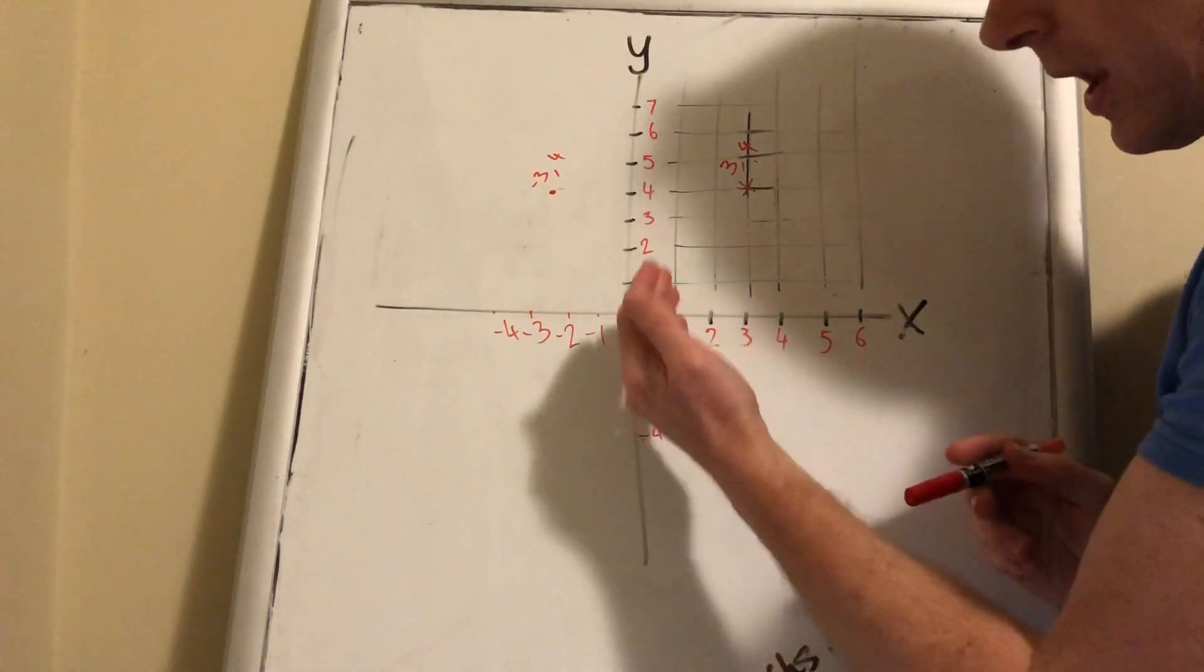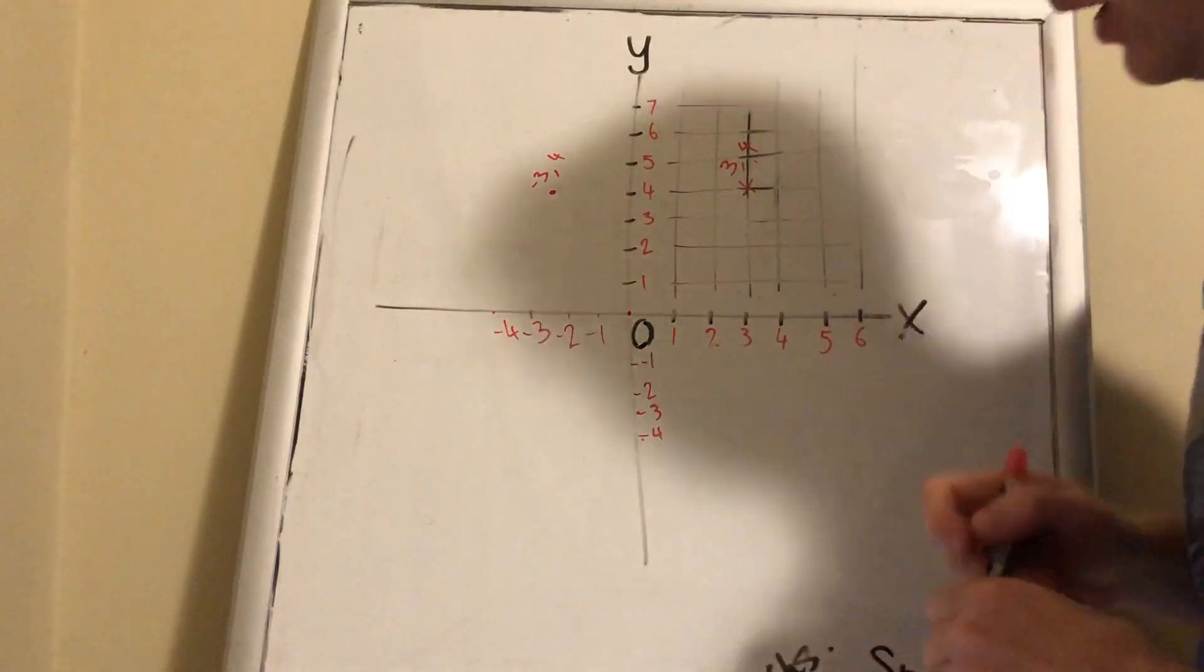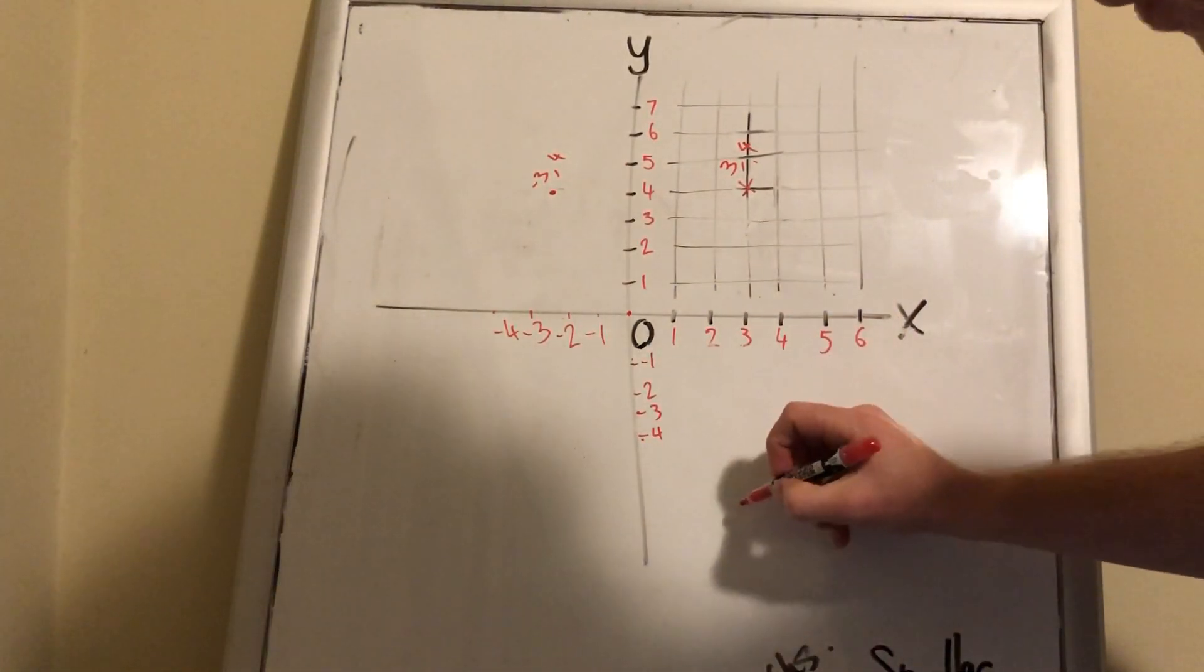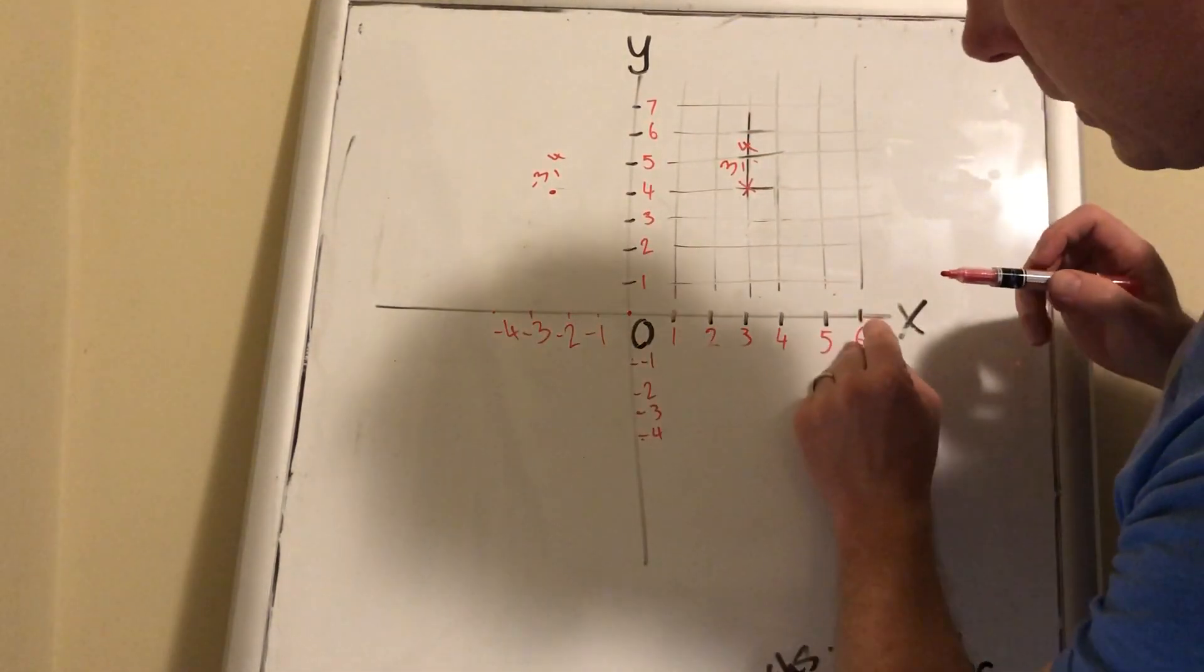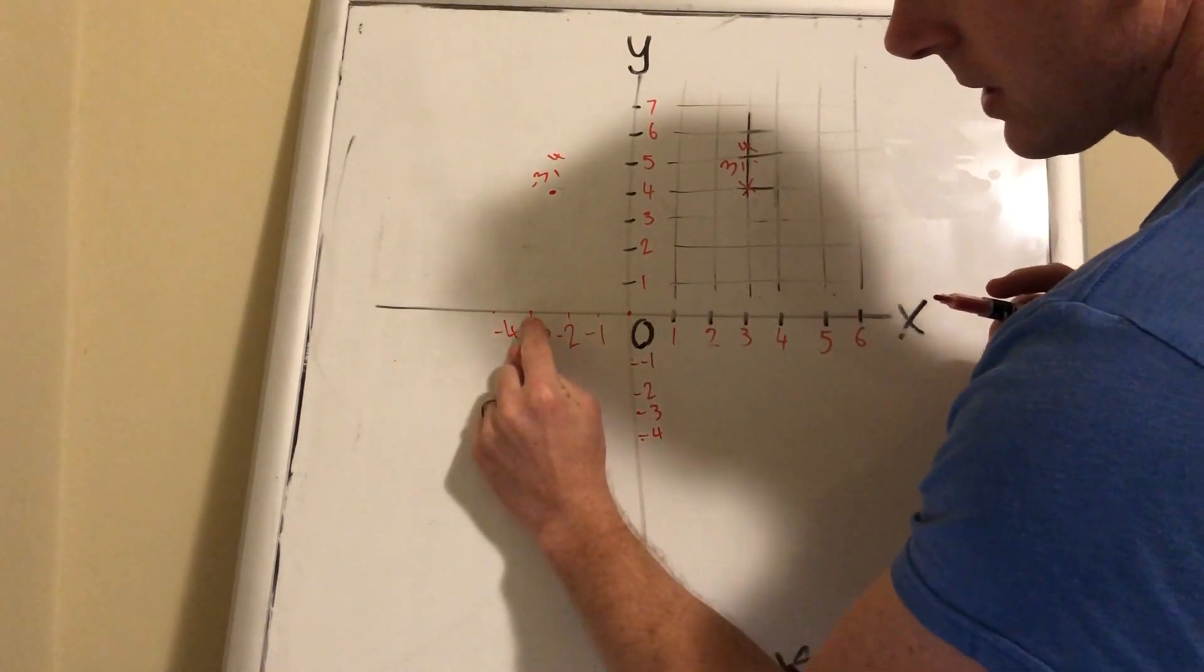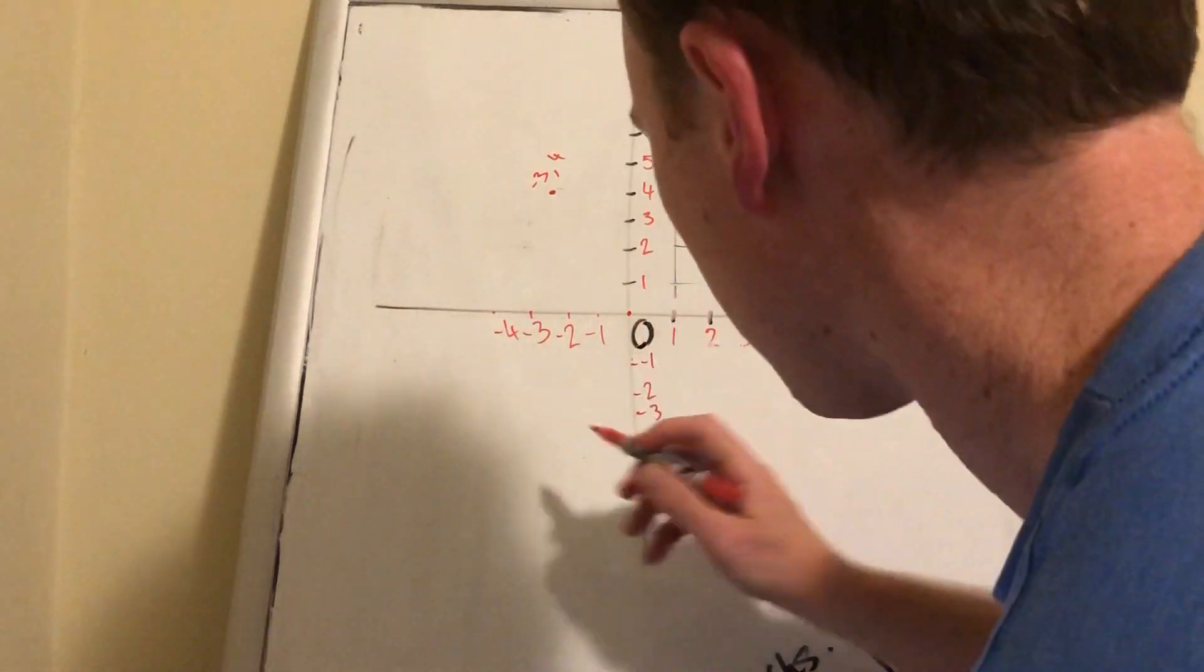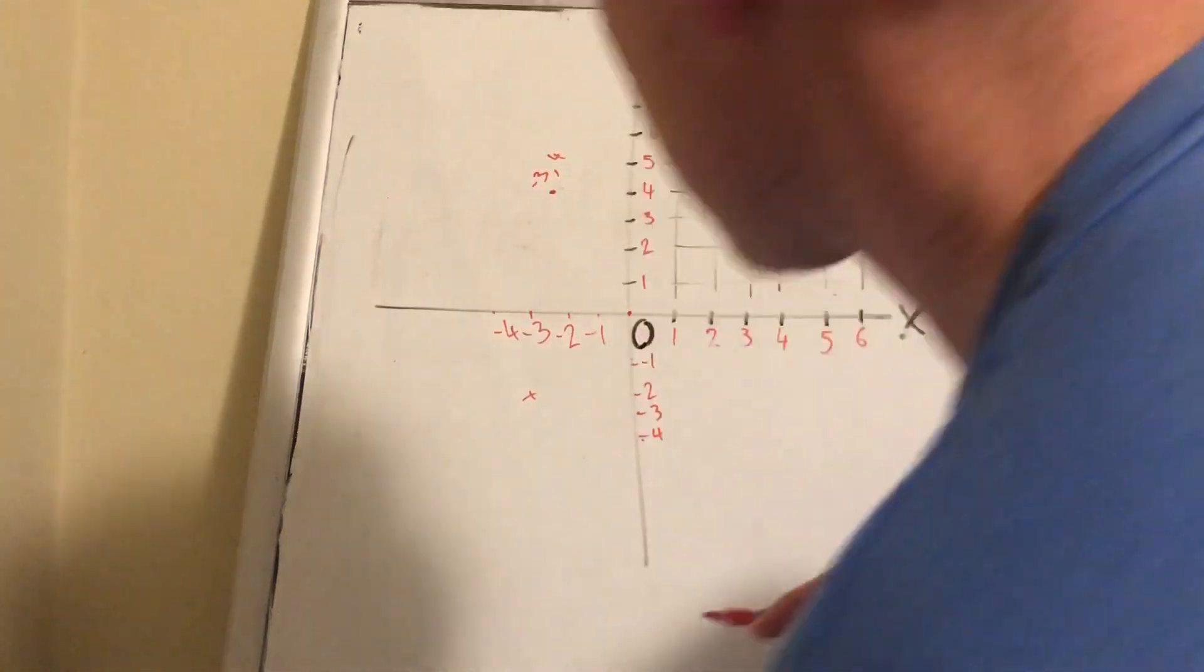You can also have coordinates that are negative on both axes. Let's say I've got negative 3, negative 2. I'll do it first: negative 3 or minus 3 is on the x-axis, and minus 2 on the y-axis. So I'm going to come into about here, and there's my spot.